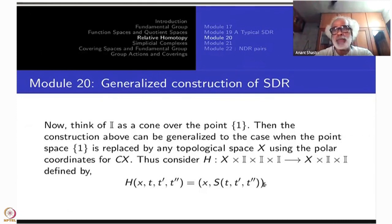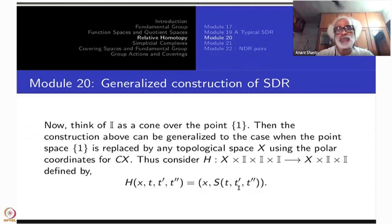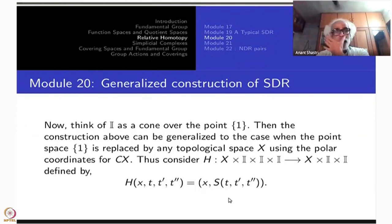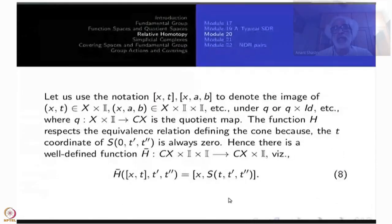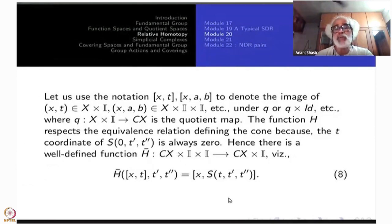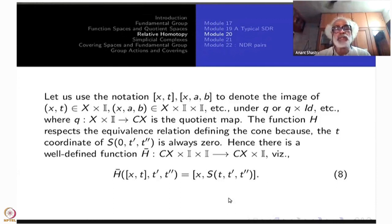What you are interested in is the homotopy S defined last time from I×I×I to I×I, obtained by stereographic projection from (0,2). So define H of (x, t, t′, t″) = (x, S(t, t′, t″)), which is obtained by pushing via stereographic projection from (0,2). Let us use the notation: round brackets for elements in the product space, and square brackets for elements in CX×I×I×I. There is one cone construction quotient map Q from X×I to CX.